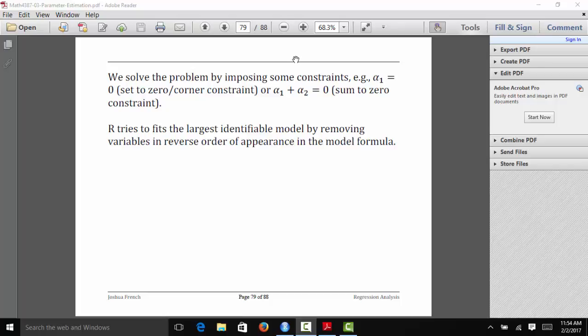R actually has an automatic approach for dealing with this issue. R tries to find the largest identifiable model by removing variables in reverse order of appearance in the model formula. When we write out these regression models in R, it removes the last variable to see if that corrects the problem. If it doesn't, then it removes the last two variables and so on. It keeps removing variables until eventually there's no problem with collinearity.